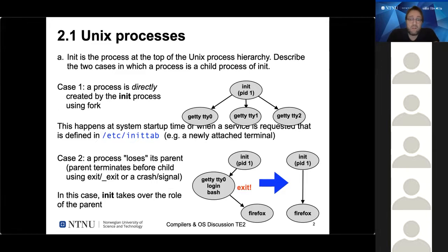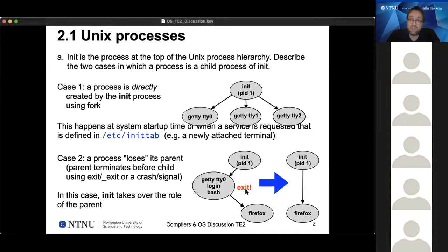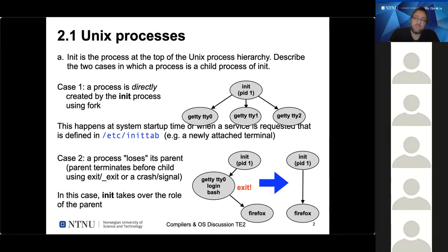Init has a second function: because it's the ancestor of all other processes in the system, it can take on the role of adopting orphaned processes. If a process like Firefox was started using a shell (bash) and that shell crashes, is killed, or exits, we still want to be able to control Firefox. In this case, the parent process ID of Firefox is reset — originally pointing to bash's PID — and is rerouted to point to init's process ID 1. So init becomes a foster parent.